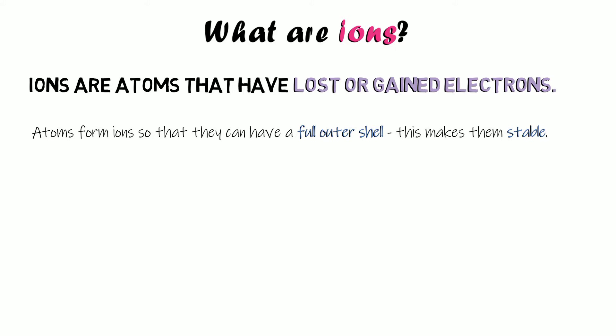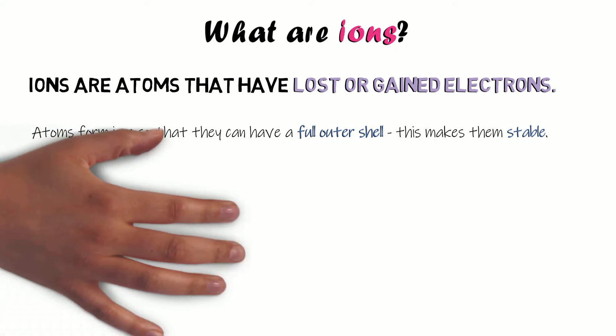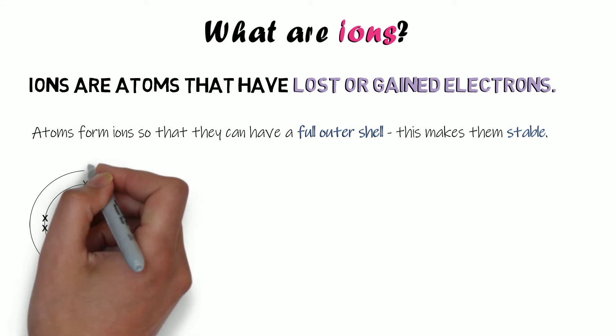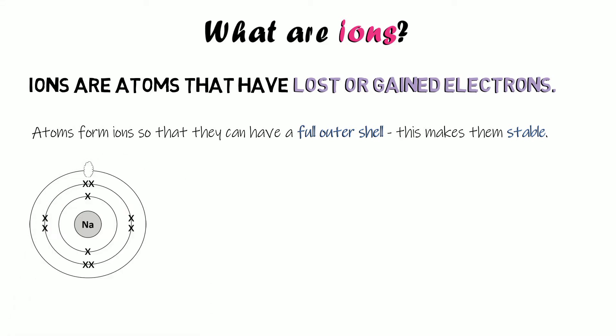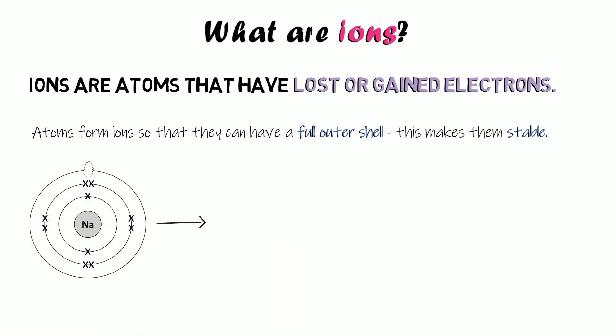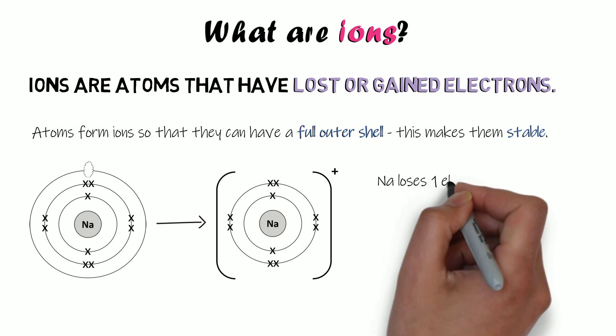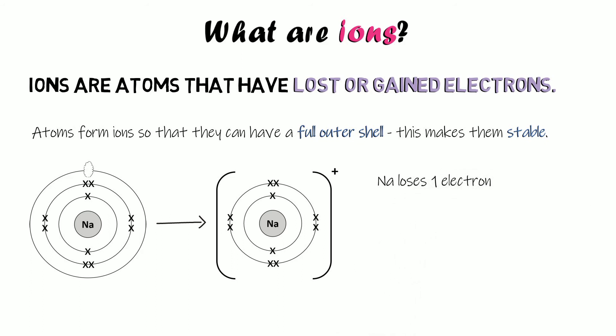Because a full outer shell makes atoms more stable. If we look at our sodium atom, it's got one electron in its outer shell — it is not stable at this point. So it's going to form an ion to become more stable. It does that by getting rid of one of its electrons; it loses that outer shell electron and forms a sodium ion.